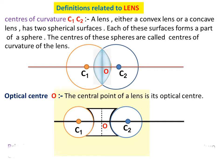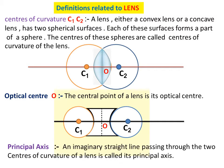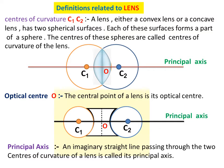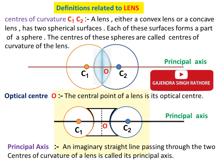The next definition is principal axis. An imaginary straight line passing through the two centers of curvature of a lens is called its principal axis.